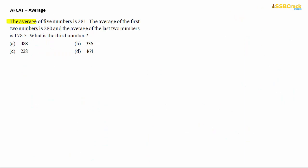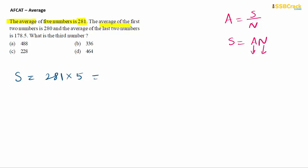Next question: The average of 5 numbers is 281. From the first line, applying S = A × N, the total sum S = 281 × 5 = 1405. The next part says: the average of the first two numbers is 280, and the average of the last two numbers is 178.5. The remaining middle (third) number is unknown — let's call it X.